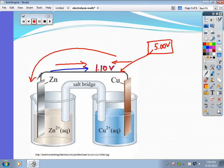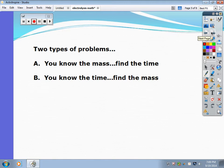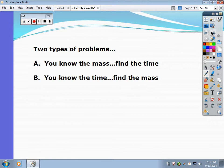And again, we'll go into exactly what's happening in the cell later on. But for this test, you need to understand the math. So there's two types of problems. First, there's a problem where you know the mass, and you're going to find the time. And the second type of problem where you know the time, and you find the mass. So let's try one of each.